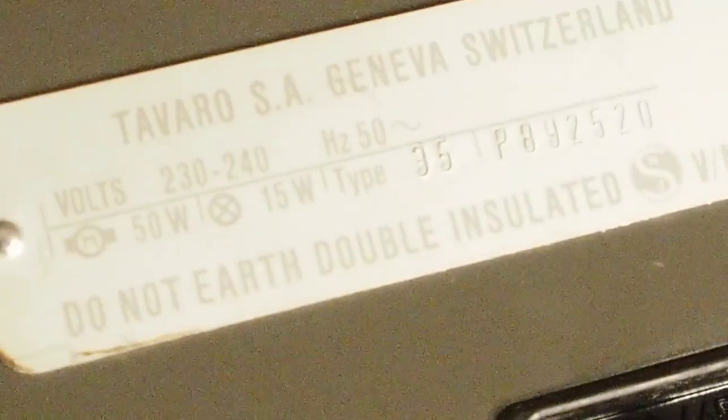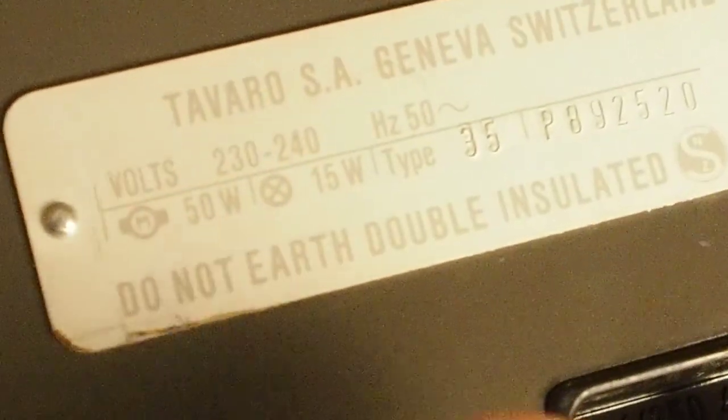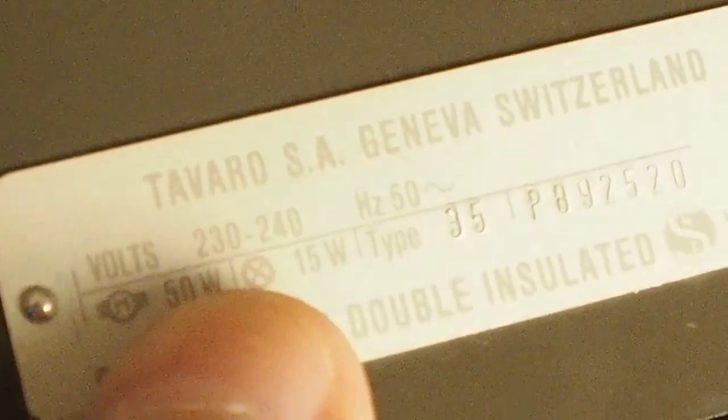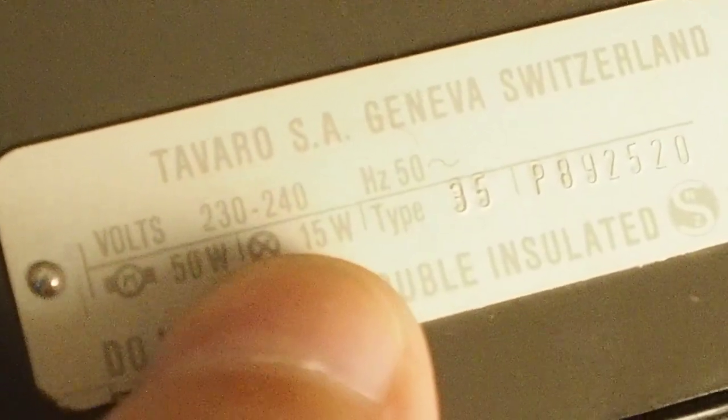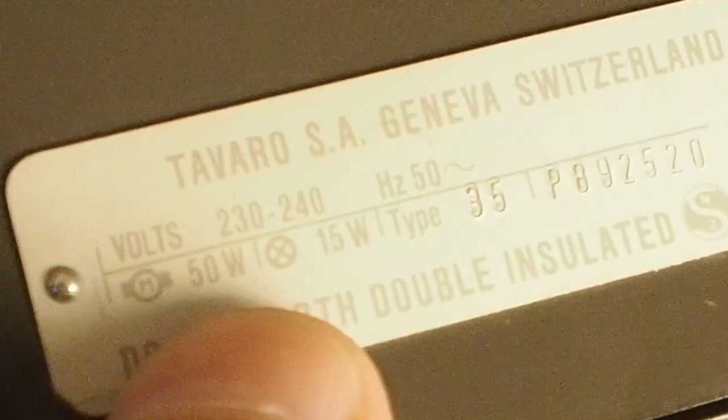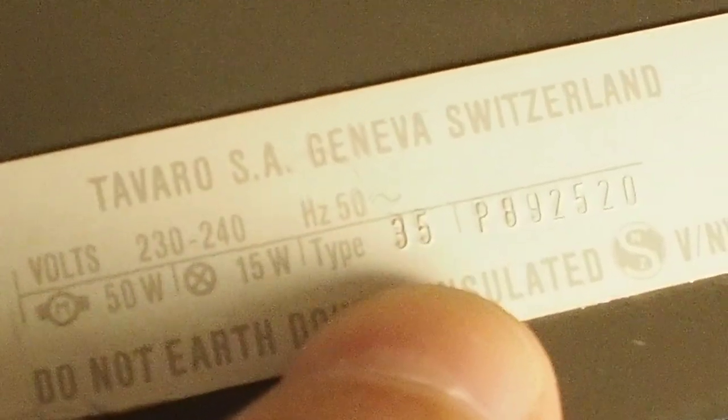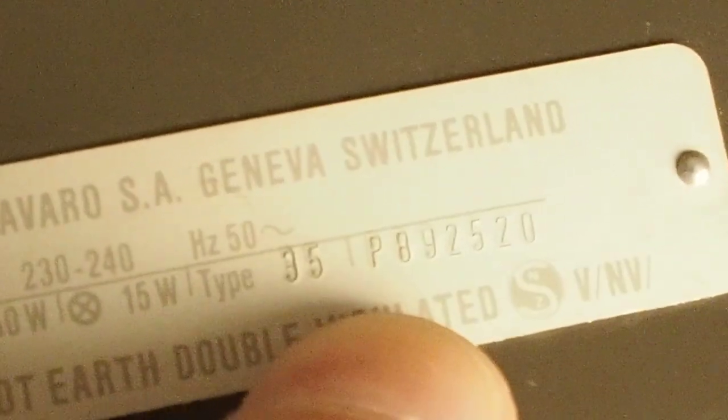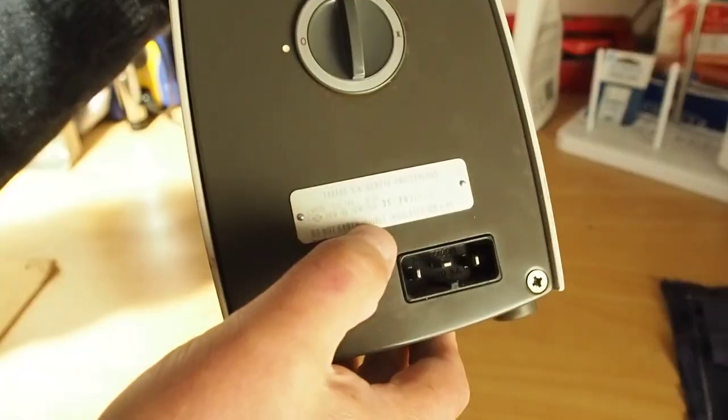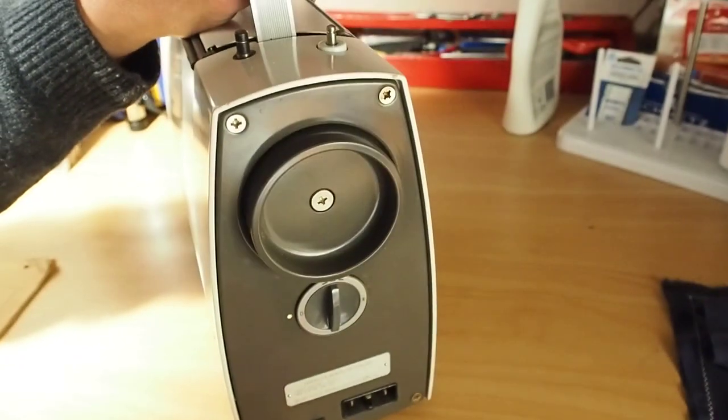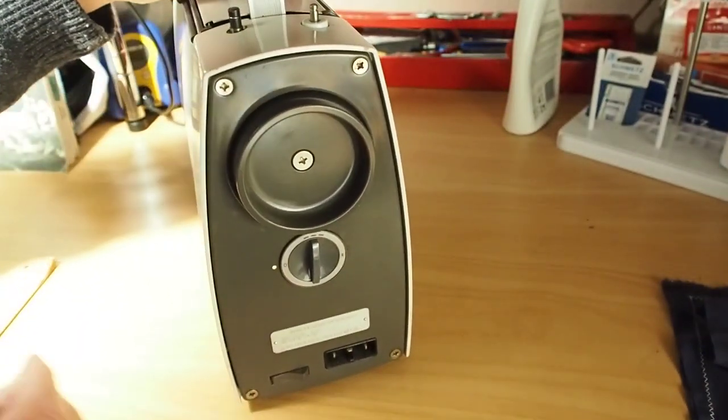Stamped on the side of the machine you'll see that number. You've got your voltage for your region. So we're 230, 240 volt, 50 watt motor, 15 watt bulb, type 35 and there's the serial number there. So that's the little tag on the side of the machine. That's quite handy for model identification.